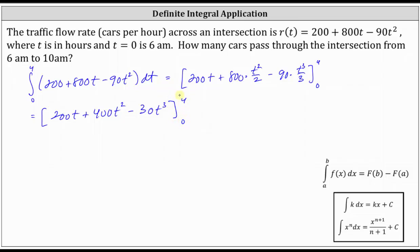Next, we determine big F of four minus big F of zero, where big F of four is equal to 200 times four plus 400 times the square of four minus 30 times the cube of four. And then notice F of zero is just going to be zero plus zero minus zero, giving us minus zero.